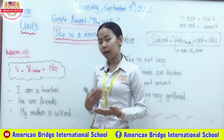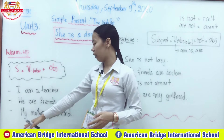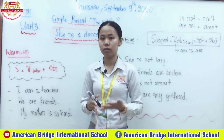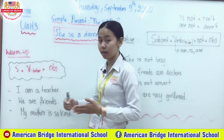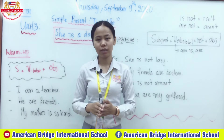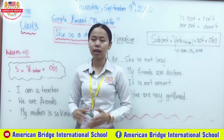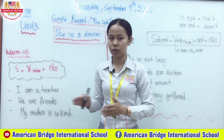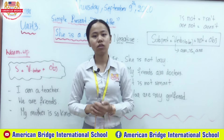'My mother is so kind' — 'my mother' is a singular subject representing 'she,' which is why we use 'is.' I hope you still remember what we learned in the previous session. I just tried to recap the simple present of the verb 'be.' Now let's continue our lesson.